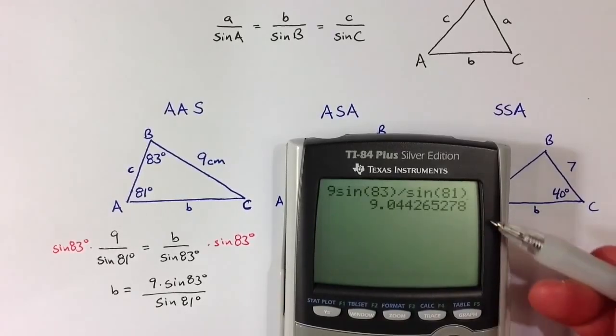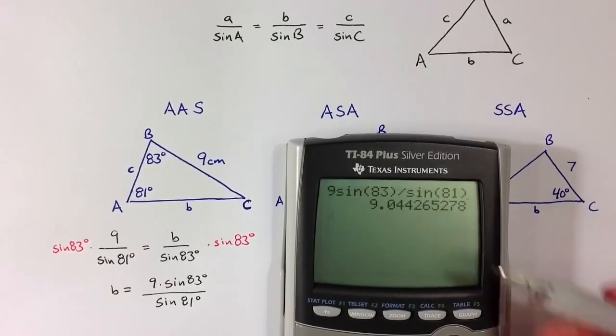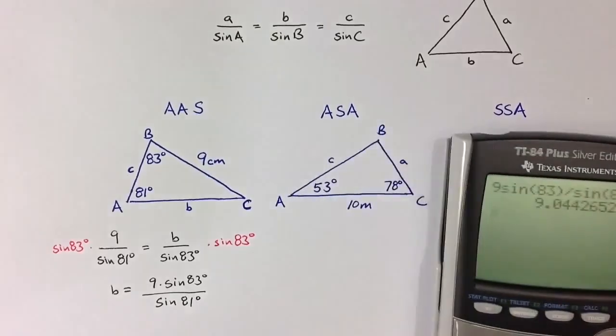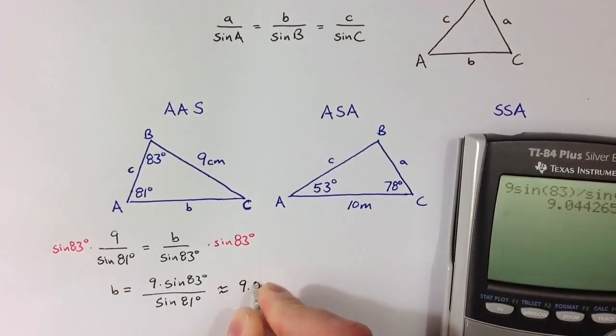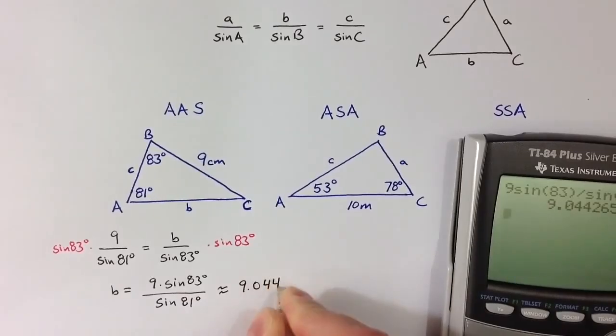And then hit enter. And we see the side length. Because 81 and 83 are very close in angle measure, it turns out that the side length b is pretty close to the side length a, which makes sense. The value for b is approximately 9.044 centimeters.